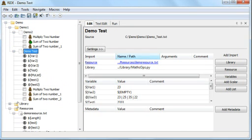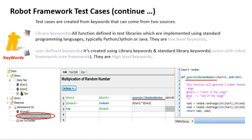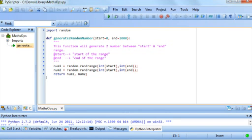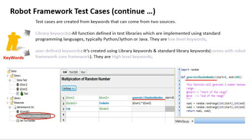There are two types of keywords: library keywords and user-defined keywords. Library keywords are the keywords or functions implemented in an external programming language — Python, Jython, or Java — and imported into your test case or test suite. These are called low-level keywords. For example, a function called 'generate two random numbers' is part of maths_ops.py, implemented in Python.